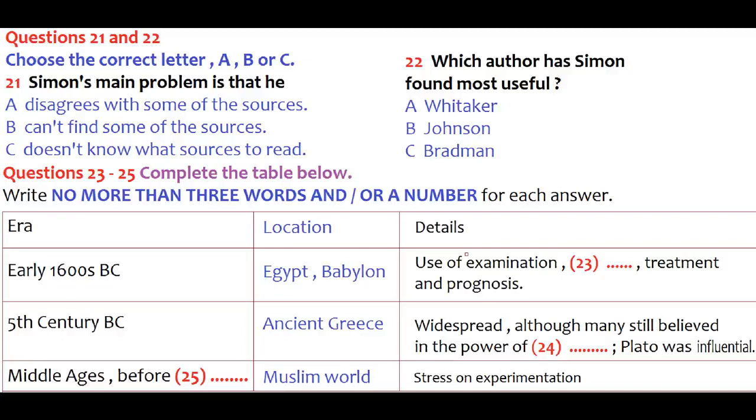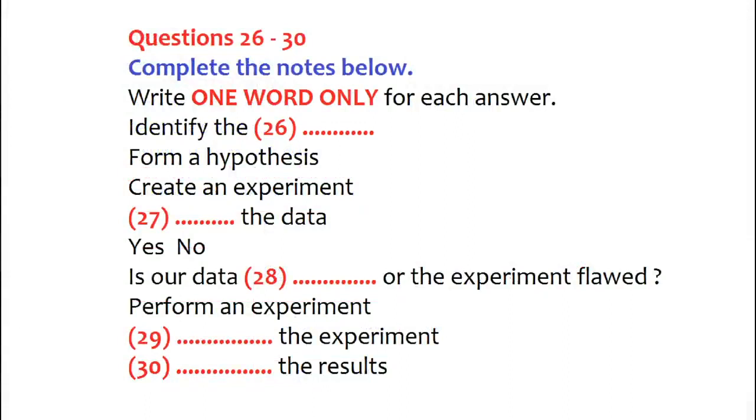Before you hear the rest of the conversation, you have some time to look at questions 26 to 30. The other thing I'm struggling with slightly is actually pinning down precisely what we mean by the scientific method. I wonder if you could give me some pointers on that. Sure. Well, it's best to think of the scientific method as a series of steps in a process which allows us to find answers to questions about the world around us. So the first step is to identify the problem. What is it that you want to know or explain?